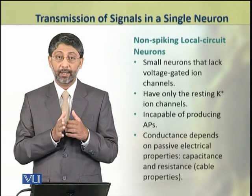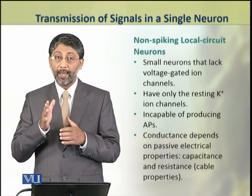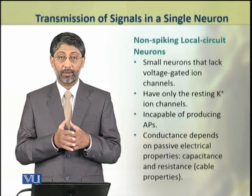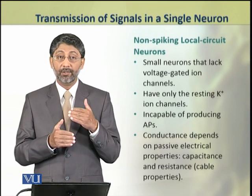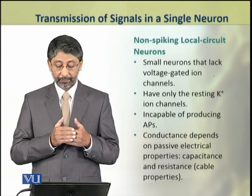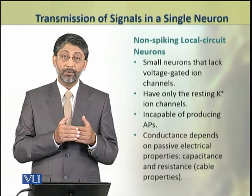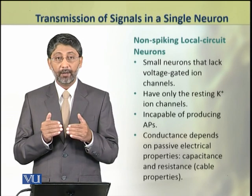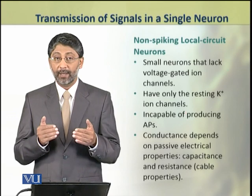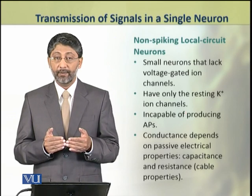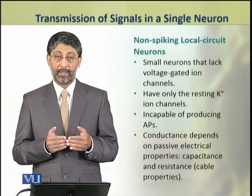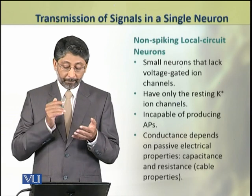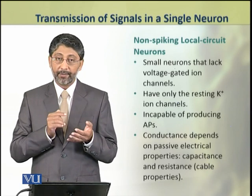To generate action potentials, voltage-gated ion channels are required. Neurons that do not have these channels do not generate action potentials. In these neurons, conductance depends on their passive electrical properties, which we call cable properties, which include capacitance and resistance.